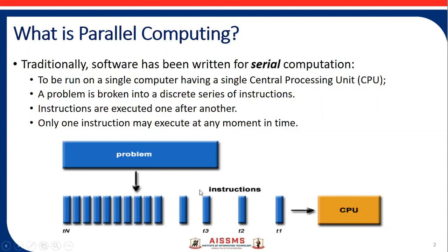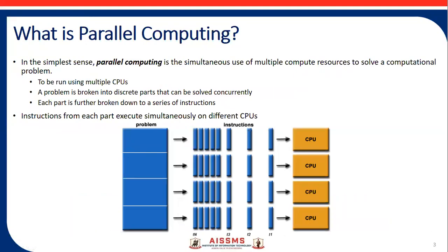In the traditional computing process, one problem and its instructions are executed sequentially and serially. There is only a single central processing unit. The problem is broken into a discrete series of instructions, and they are executed one after another — only one instruction executes at a time.